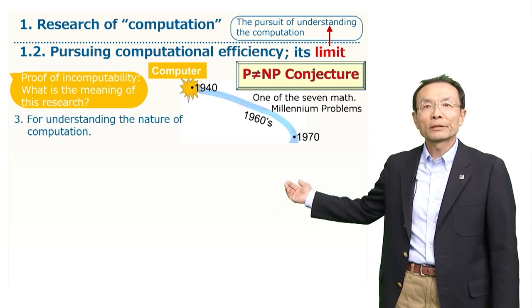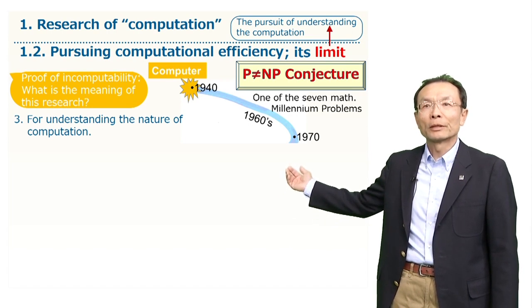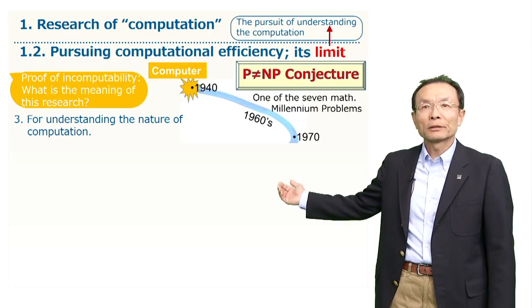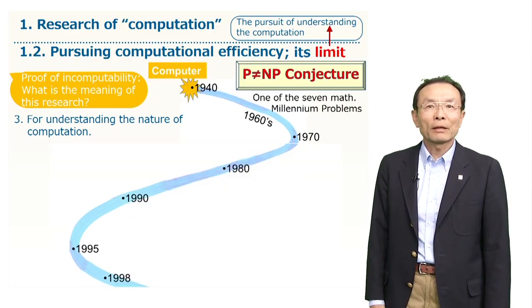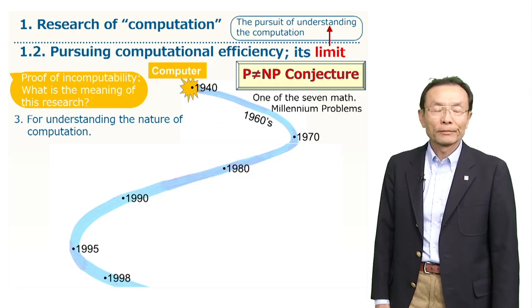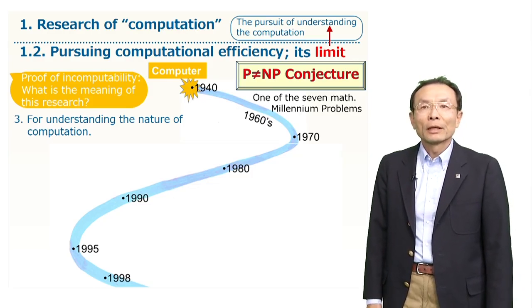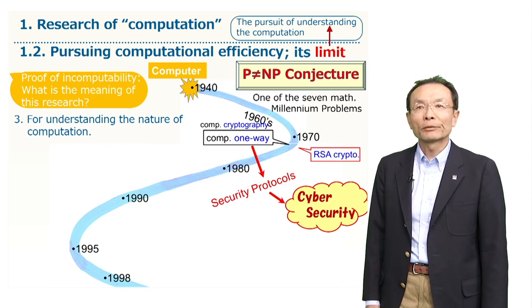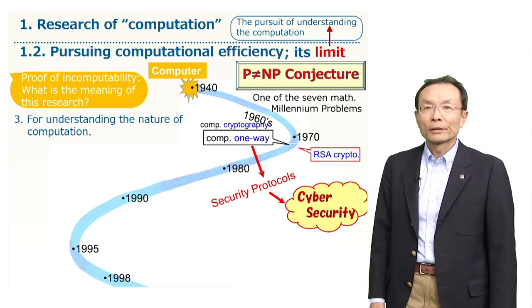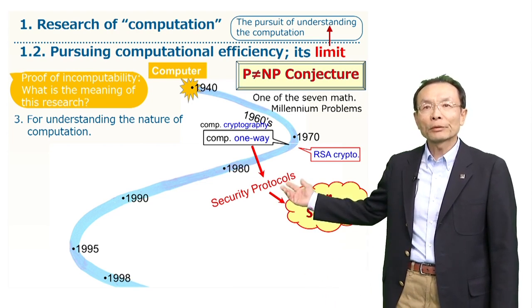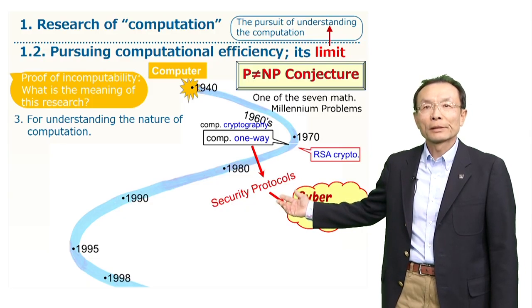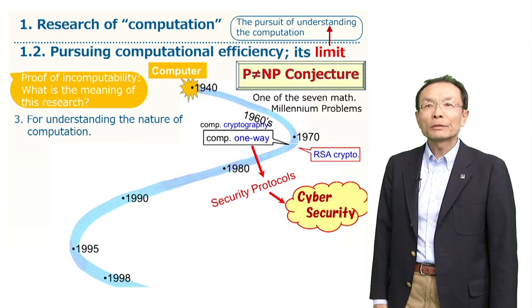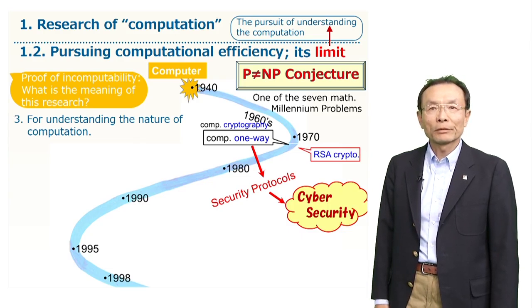Similar achievements have been established from the research of the limits of algorithmic efficiency. Let us see the trajectories since the discovery of Cook and Levin. As I mentioned, the hardness of NP problems are quite related to cryptography. In fact, the notion of public key cryptography and its basis have been established in computational complexity theory, which became the basis of cyber security.